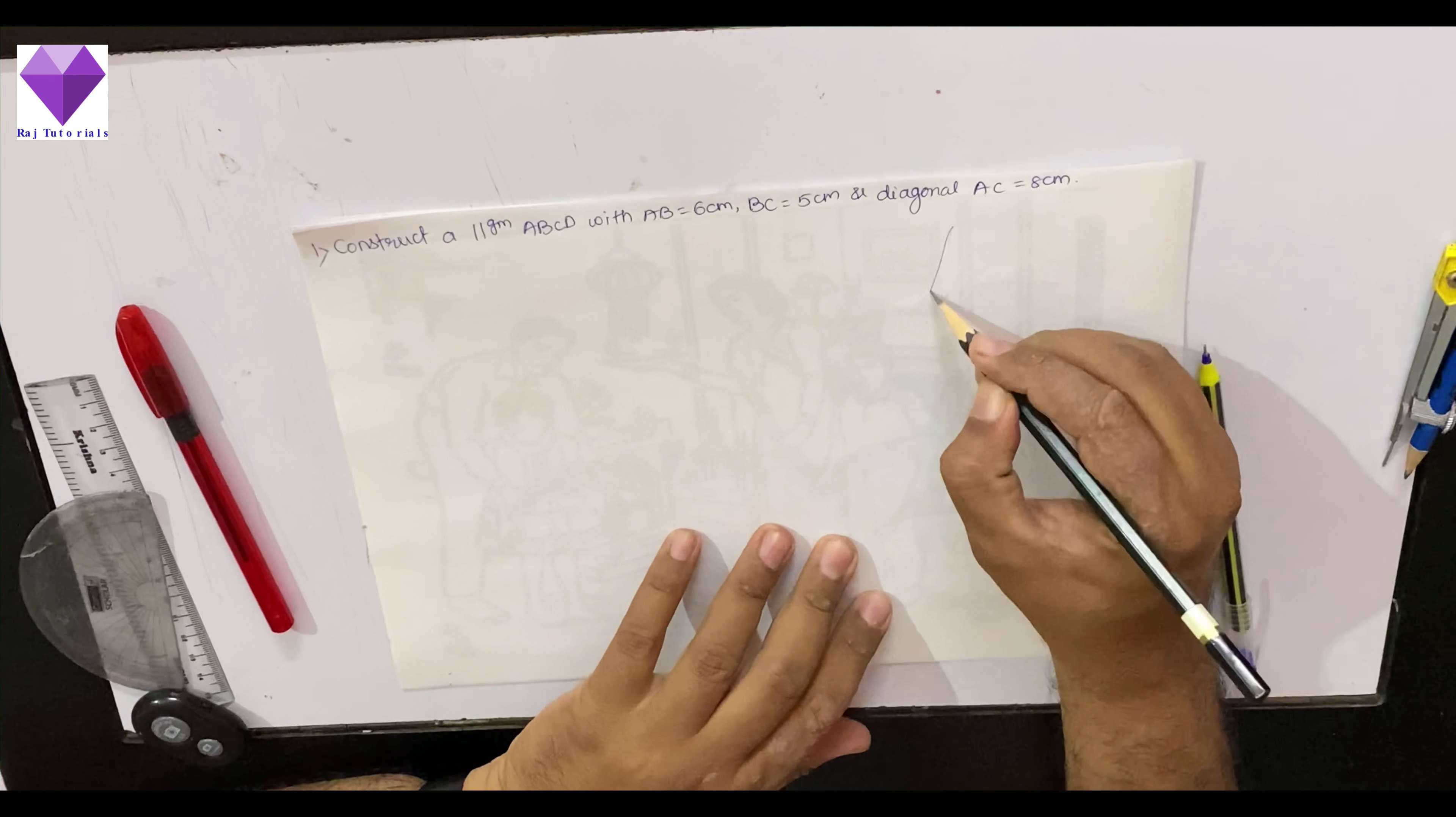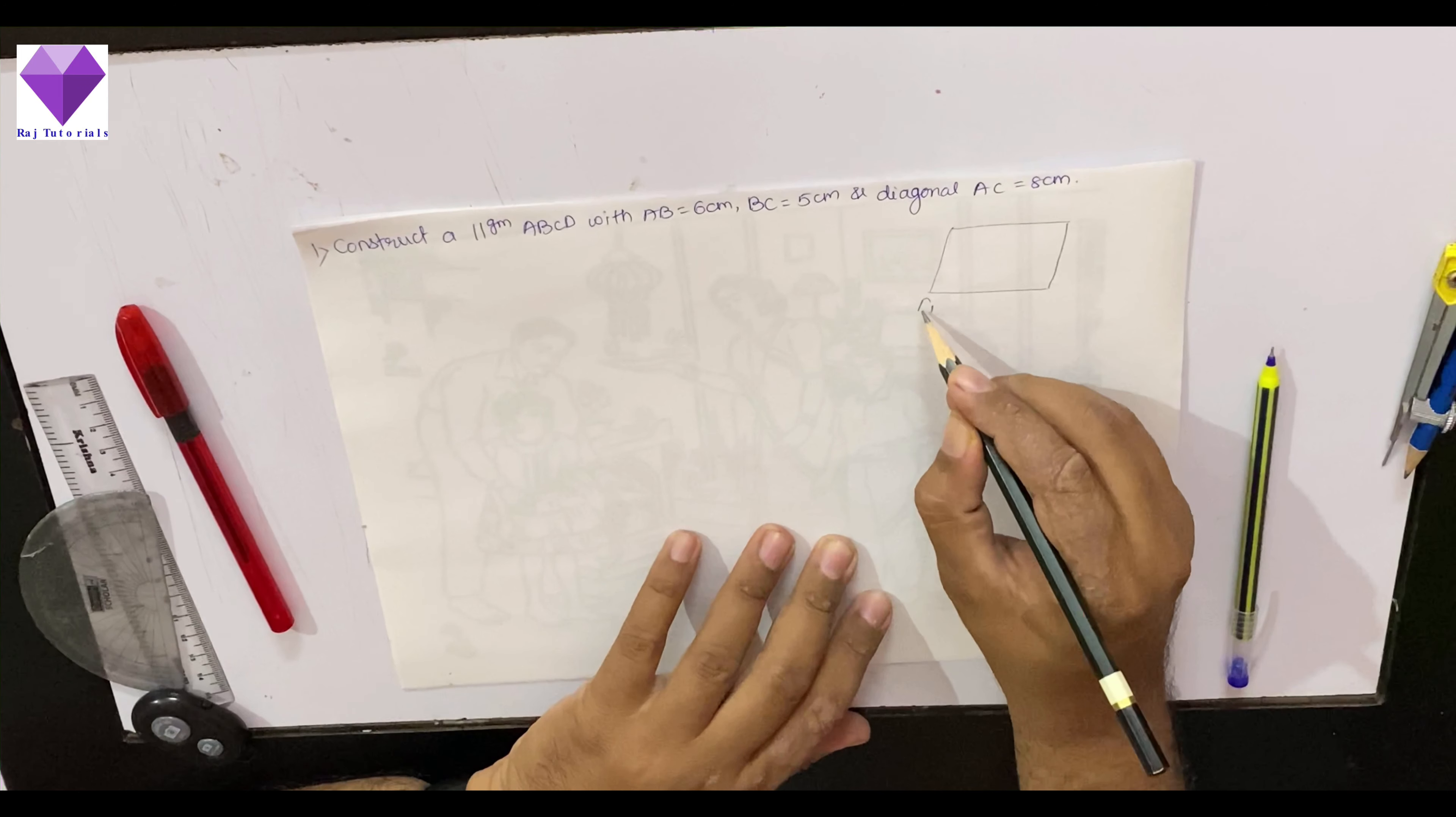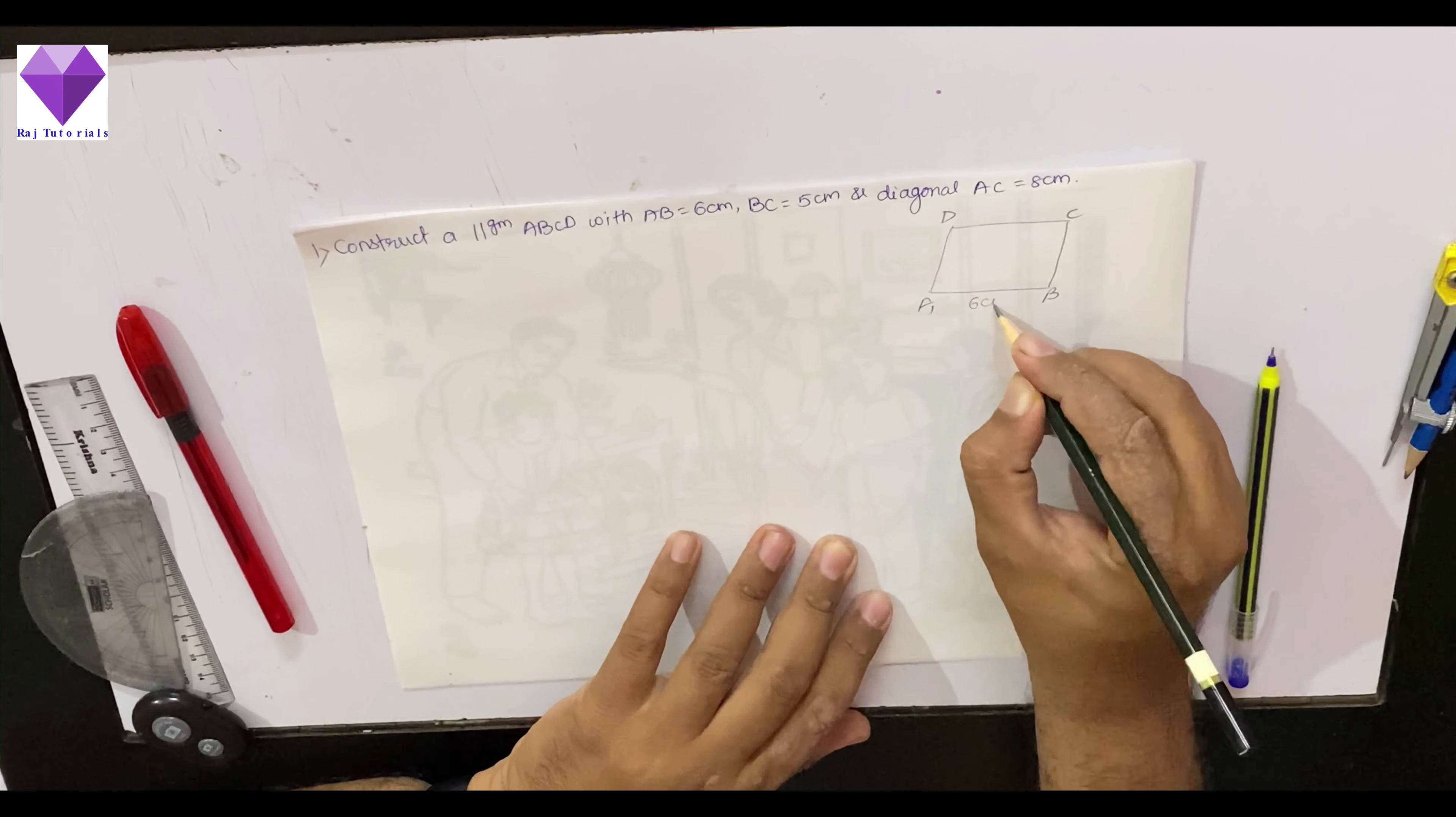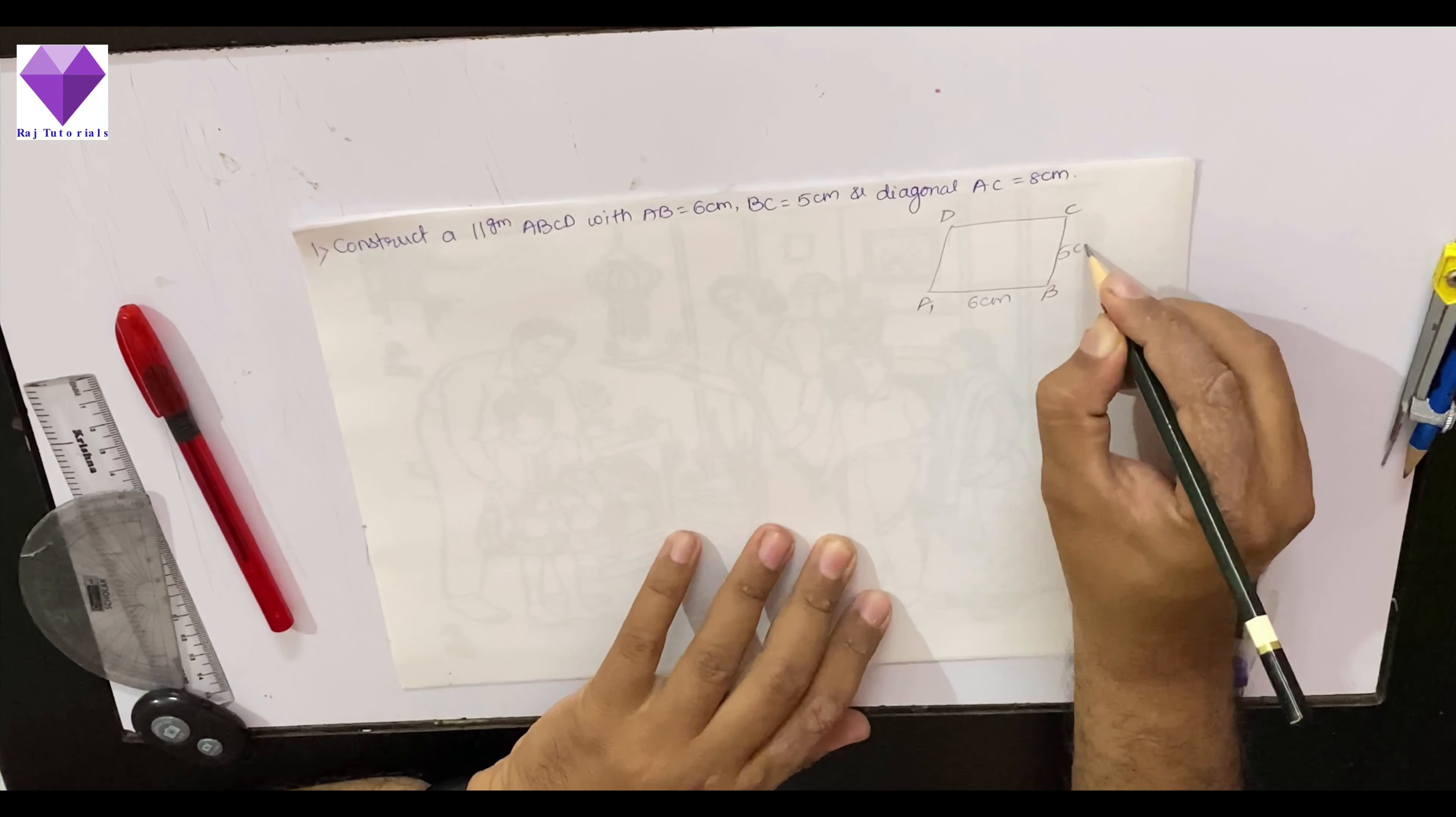First of all, I am drawing a rough sketch of this. This is my ABCD parallelogram where AB is 6 cm, BC is 5 cm and diagonal AC is 8 cm.